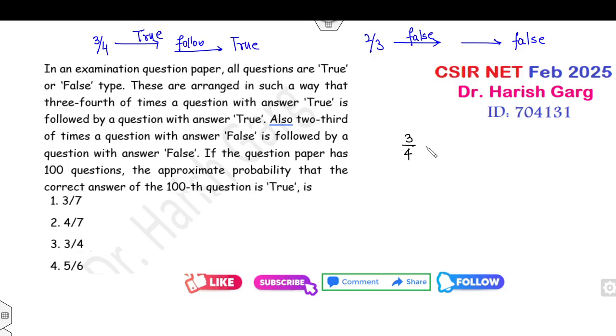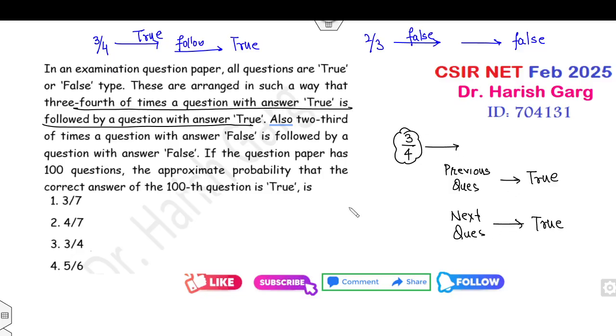What is the meaning of followed by? That means if the previous question answer is true, then the next question is also true with probability 3/4. This is related to the previous and then the next. So what is the concept behind the previous and the next? That is always taken by the Markov chain.